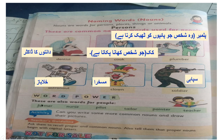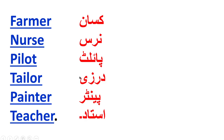These are also words for people, written down below: farmer, nurse, pilot, tailor, painter, and teacher. Everyone knows nurse. Pilot, tailor, painter, teacher — these are all common nouns referring to people.